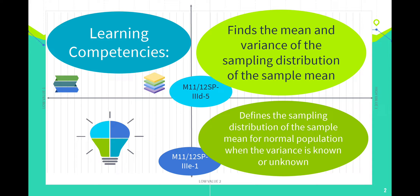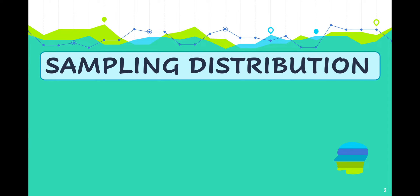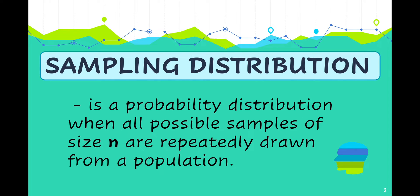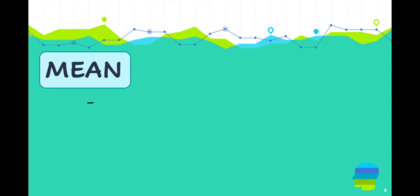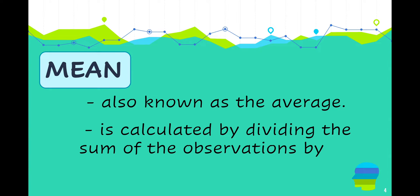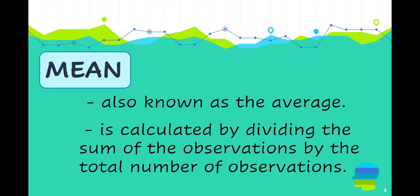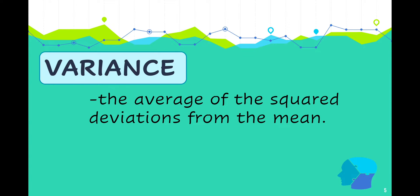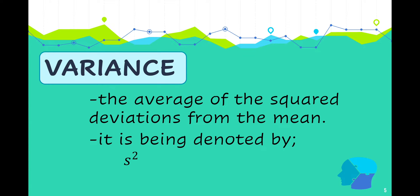Before we start, let us review our previous lessons which are related to our topic. First, sampling distribution is the probability distribution when all possible samples of size n are repeatedly drawn from a population. Mean, which is also known as the average, is calculated by dividing the sum of the observations by the total number of observations. Variance is the average of the squared deviations from the mean. It is denoted by s squared for sample variance, and sigma squared for population variance.